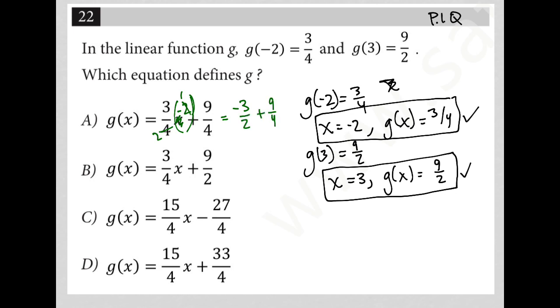In order to add those fractions, I need a common denominator, which would turn this into negative 6 fourths. Just multiply top and bottom by 2 to get a 4 on bottom. Negative 6 fourths plus 9 fourths is, in fact, 3 fourths. That is true. So, that's good. So, maybe choice A is the right answer.